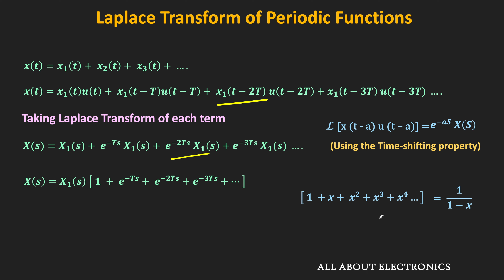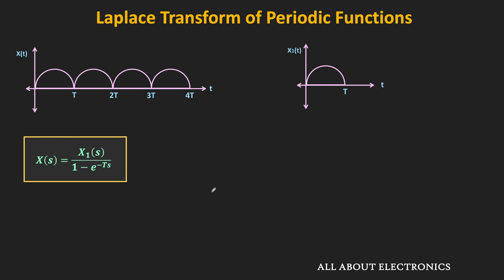In this case x equals e^(-Ts), so the series equals 1/(1 minus e^(-Ts)). Therefore, the Laplace transform of the periodic function x(t) is X1(s) divided by (1 minus e^(-Ts)), where X1(s) is the Laplace transform of x1(t) defined over the first interval 0 to T. So to find the Laplace transform of a periodic function, first find the Laplace transform over the first period, then divide by that exponential term. Let us take a couple of examples to understand this.